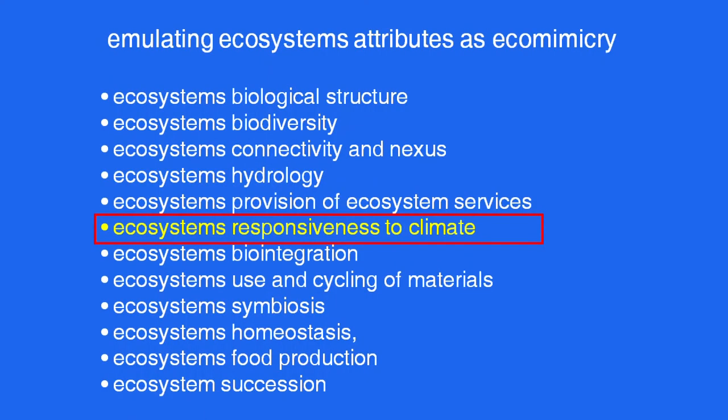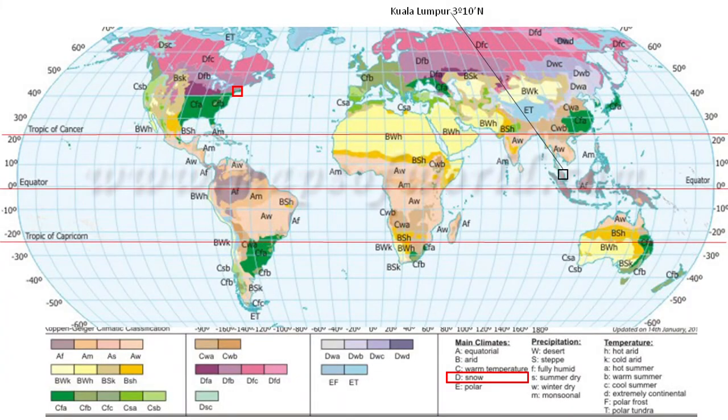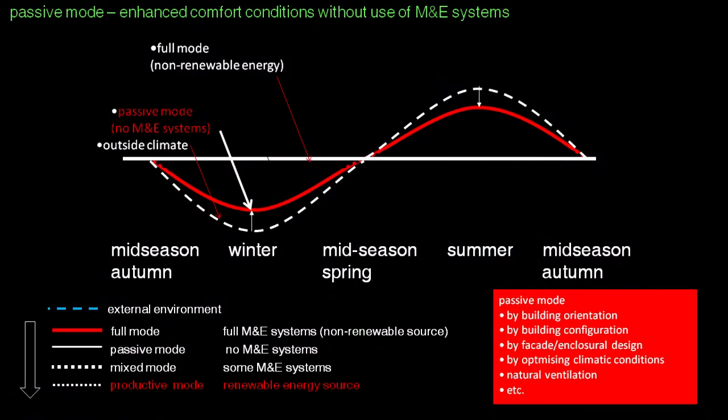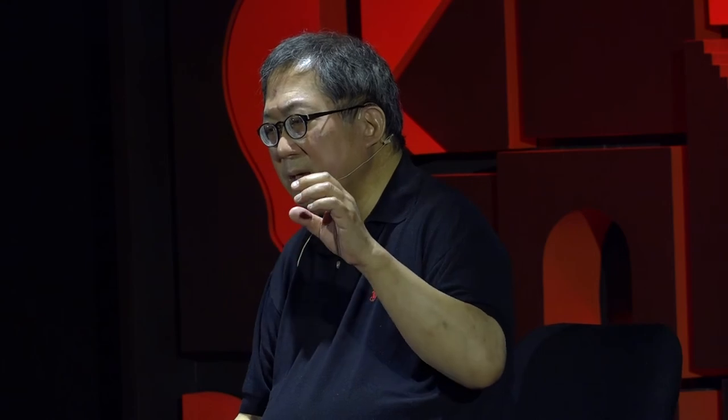The next principle is responsiveness to climate, because ecosystems respond to climate differently at different biomes across the planet, with a whole variety of climate zones and species types. We developed a system of low-energy, low-carbon design with different methods. Looking at the passive mode: engineers ask us to maintain a straight line — consistent temperature, consistent humidity, consistent air change throughout the whole year, whether it is winter, summer, or mid-season. The dashed line shows the actual outside climate conditions, which in a temperate zone means cold winters and hot summers.